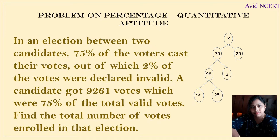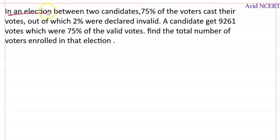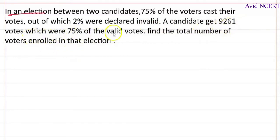Hello viewers, welcome to my channel, this is Geeta. In an election between two candidates, 75% of the voters cast their votes, out of which 2% were declared invalid. A candidate got 9261 votes which were 75% of the valid votes. Find the total number of voters enrolled in that election.